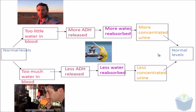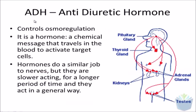Some key points to remember about ADH: A — it controls osmoregulation. B — it's a hormone, so it's a chemical messenger that travels in the blood. And it does a very similar job to nerves, but obviously it's a lot slower acting.